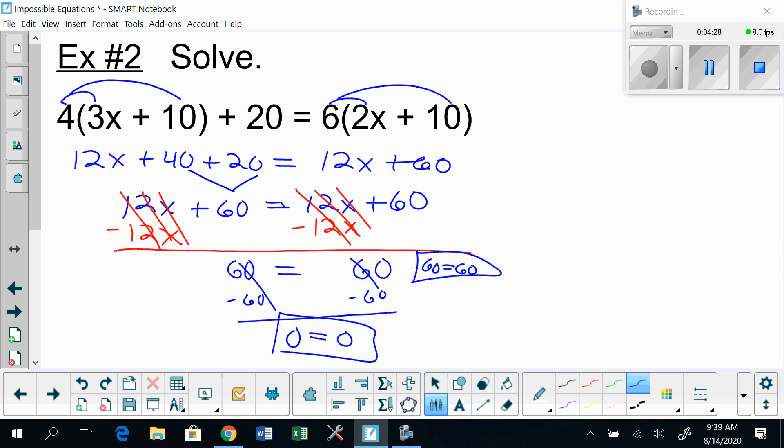So whether you stop at 60 equals 60 or 0 equals 0, it doesn't matter. In this case, we're going to take this statement that's left and decide if it's true or false. In this case, it's actually true. 60 does equal 60, or 0 does equal 0. These equations—every number in the world makes these equations true. We're gonna write 'all real numbers,' or you can use an abbreviation for all real numbers. It looks like an ℝ, but it has like a double stem to it, like this.